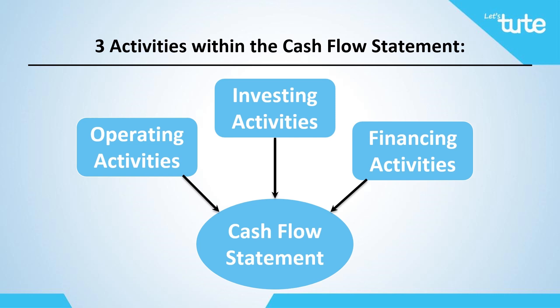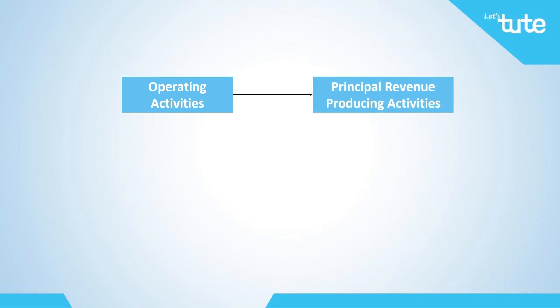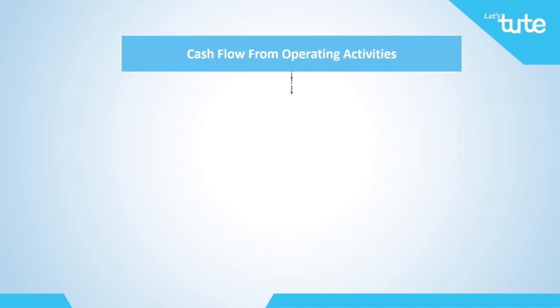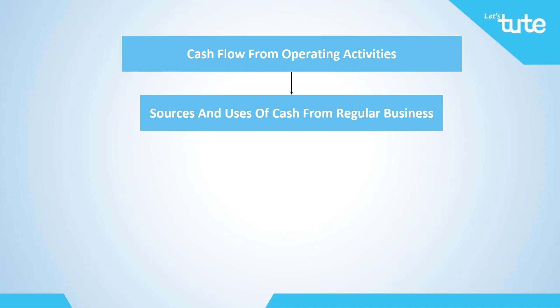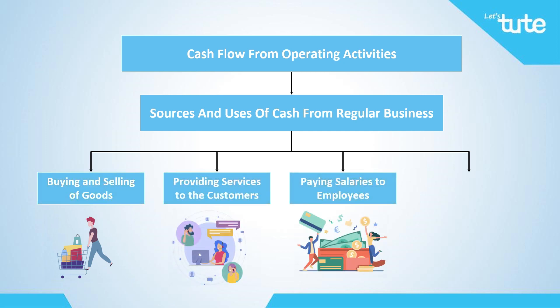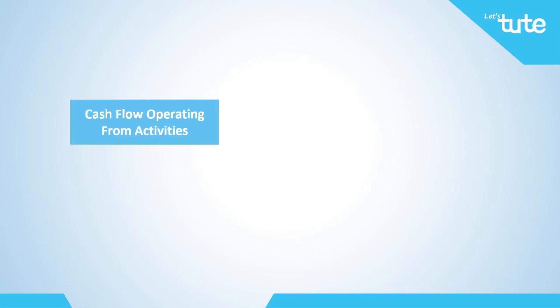Let's begin by understanding the first cash flow activity in detail. Operating activities are the principal revenue producing activities of the enterprise and other activities that are not investing and financing. In simple words, here we record the transactions related to the sources and uses of cash from regular business activities, such as buying and selling of goods, providing services to customers, paying salaries to employees, and making payments towards expenses for day-to-day operations. We can say that here we record the transactions related to the income statement.